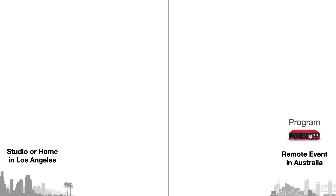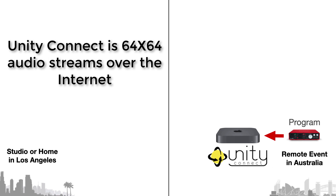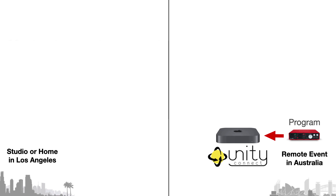So enter Unity Connect — that's what I'm going to show here. We are going to need a Mac computer in Australia at the event, but it's not going to be running the Unity Intercom server. It's going to be running Unity Connect. Unity Connect can send up to 64 channels of audio across the internet to and from an unlimited amount of locations. So Unity Connect is going to be running on a Mac computer at the local event in Australia, receiving local program audio — up to 64 audio channels — from a soundboard or a USB device.